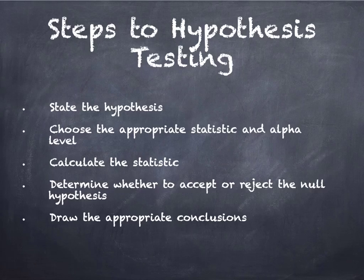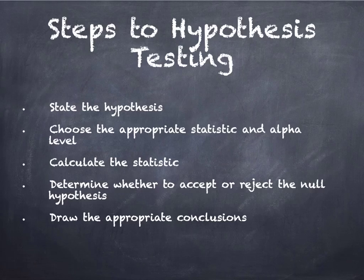After they write their hypothesis, they should choose the appropriate statistic and alpha level. The appropriate statistic is based primarily on the level of measurement they have, or based on the questionnaires and the hypothesis. The next video will be on t-tests, and then the final video will be on correlation and chi-square. I'll be talking about what level of measurement for each of the variables — for the independent and dependent variables — would be needed.